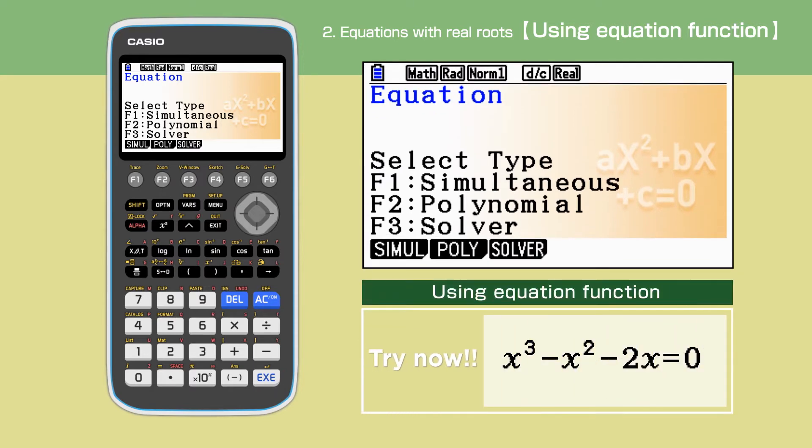We are going to look at the equation x cubed minus x squared minus 2x equals 0. There are three possible ways to work this out with this calculator.